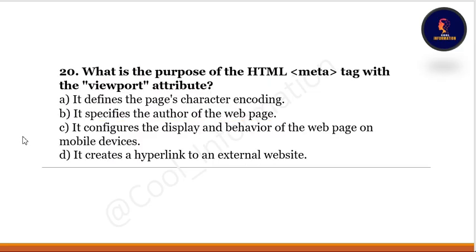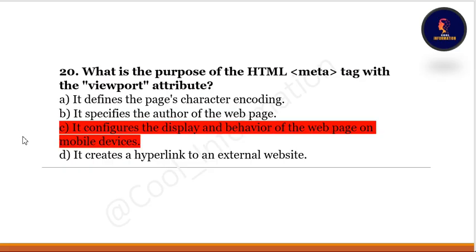The last question: what is the purpose of the HTML meta tag with the viewport attribute? Option A: it defines the page character encoding. Option B: it specifies the author of the web page. Option C: it configures the display and behavior of the web page on mobile devices. Option D: it creates a hyperlink to an external website. The correct option is C — it configures the display and behavior of the web page on mobile devices.